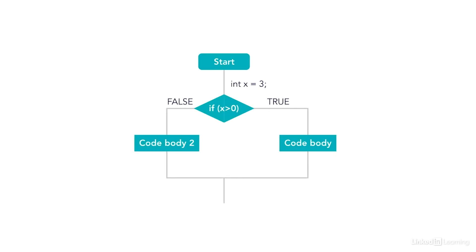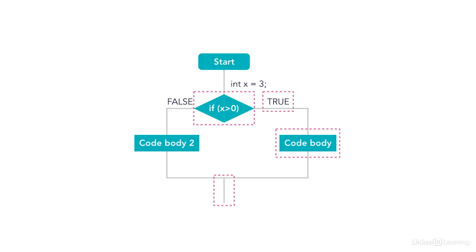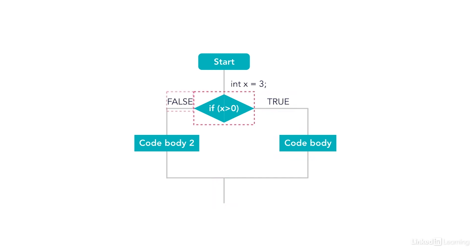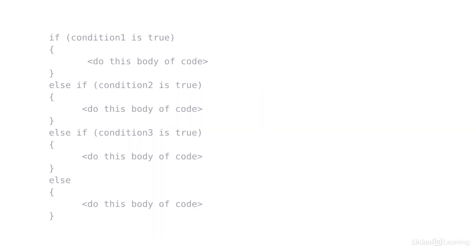The flowchart for the if-else looks like this. If this condition is true — x greater than 0 — I will go to the true side and execute the code body. If this condition is false, I will come over to the false side and do code body two.